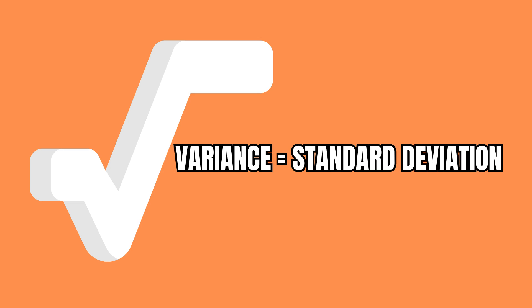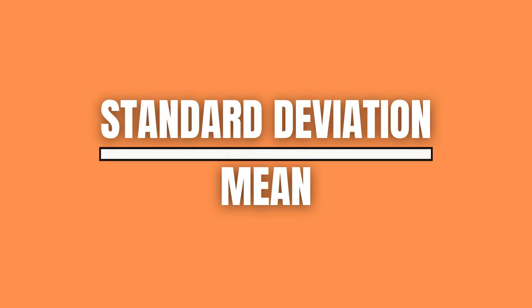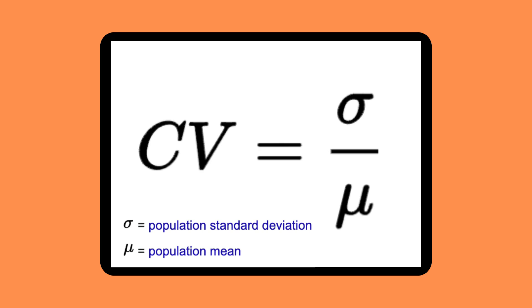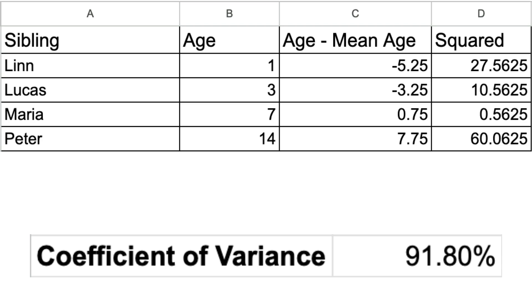Now we simply take the square root of the variance to get the standard deviation, which is 5.74 years. Finally, we divide the standard deviation by the mean, just like the formula states. So 5.74 years divided by 6.25 years is 0.918, or 91.80 percent.